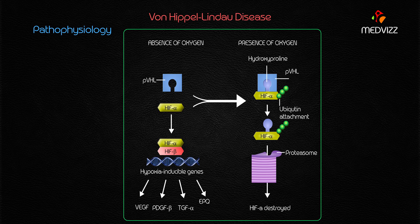In summary, the VHL gene encodes a protein responsible for inhibiting RNA synthesis. Whenever the gene is mutated, the ability to inhibit RNA synthesis is lost and vascular malformations develop along with other tumors.